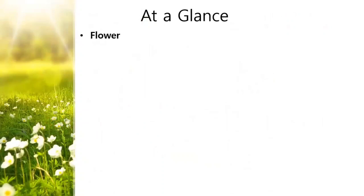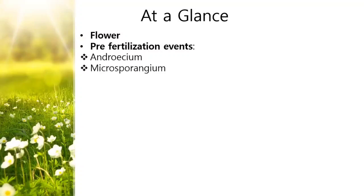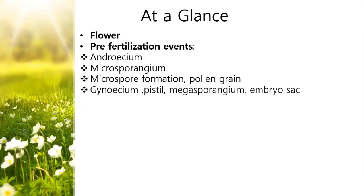Sexual reproduction in flowering plants starts with the flower. The flower consists of four different whorls - essential and non-essential. We are going to study about the fertilization of the flowering plants. Before fertilization, the androecium is the male sex organ - it is functional in microsporangia and microspore formation. The microspore later develops into pollen grains. In the female reproductive part, the gynoecium, the megaspore develops into a female gametophyte called the embryo sac. After that, the transfer of pollen grains from flower to flower is called pollination, and next comes fertilization.